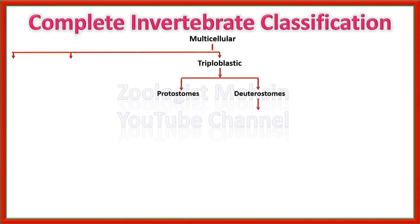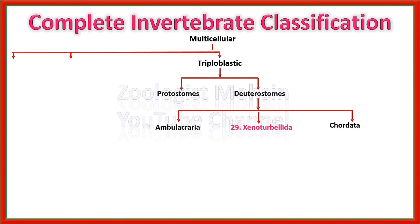Deuterostomes are those organisms in which the anus forms first during development. Deuterostomes are divided into two major clades: Ambulacraria and Chordata. There is another phylum called Xenoturbellida, which is not included among either Ambulacrarians or Chordates — it is placed in a separate lineage. Please remember that as an exception.